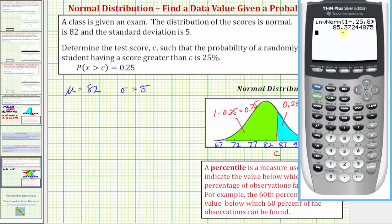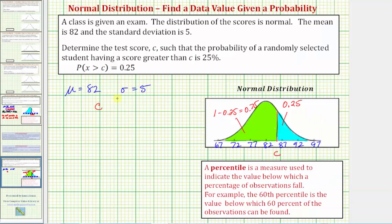So this is the value of c we're looking for. To one decimal place, we would say c is approximately 85.4. So we'll say c equals, or it's approximately 85.4, which tells us the probability that X is greater than 85.4 is equal to, or approximately 0.25, or 25%.